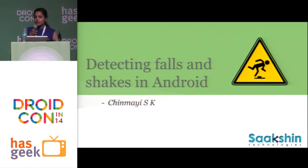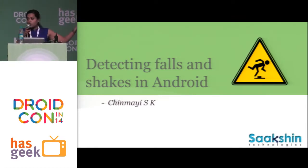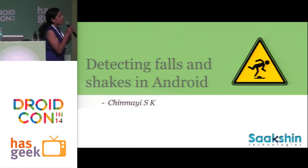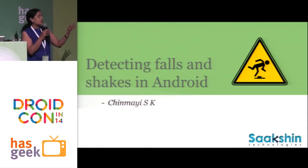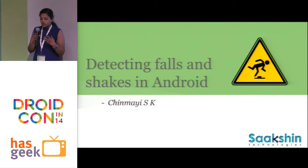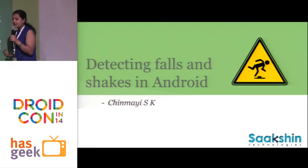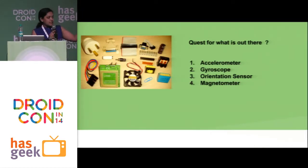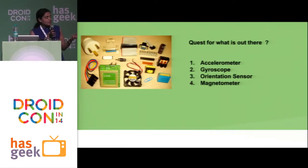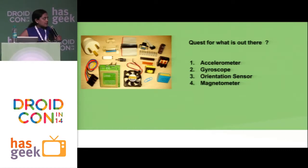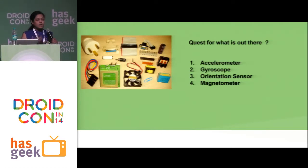I'm going to take you through what process we went through to detect a phone fall and what we came across as hurdles. Basically, there are no libraries which actually take care of phone falls or shakes or even orientation with phones. You'll have to use the sensors and write them. There are various sensors like accelerometers, gyroscope, orientation sensor, and magnetometer that Android provides, where gyroscope is not very common with low-end devices. But the rest of them are pretty handy when you're doing something like this.